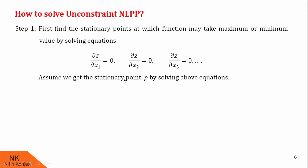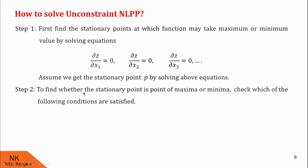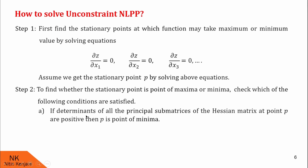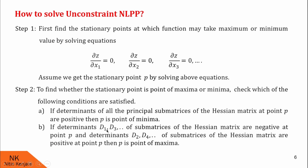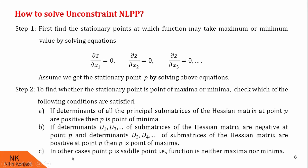Assume we get the stationary point P by solving the above equations. Then we proceed to Step 2: to find whether the stationary point is a point of maxima or minima, we check which conditions are satisfied. First condition: if determinants of all principal sub-matrices of the Hessian matrix at point P are positive, then P is a point of minima. Second condition: if determinants d1, d3 (all odd-order sub-matrices) are negative at P, and determinants d2, d4 (all even-order sub-matrices) are positive at P, then P is a point of maxima. In other cases, P is called a saddle point, meaning the function neither attains maxima nor minima.